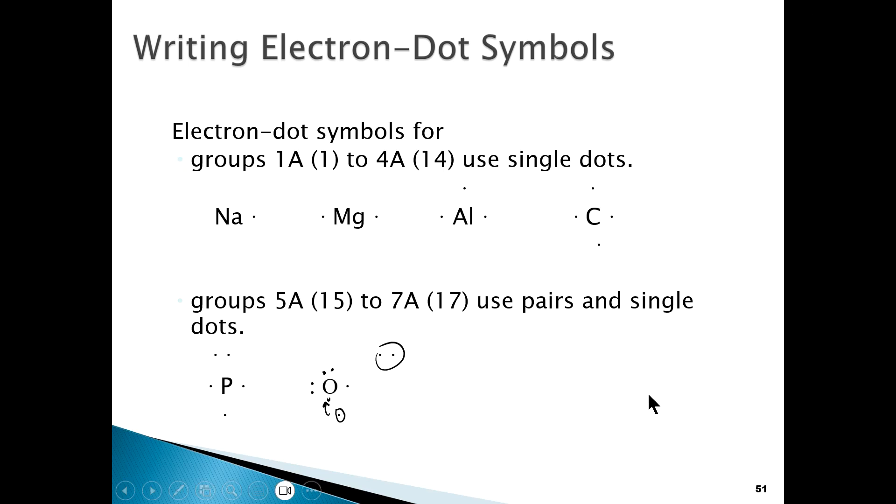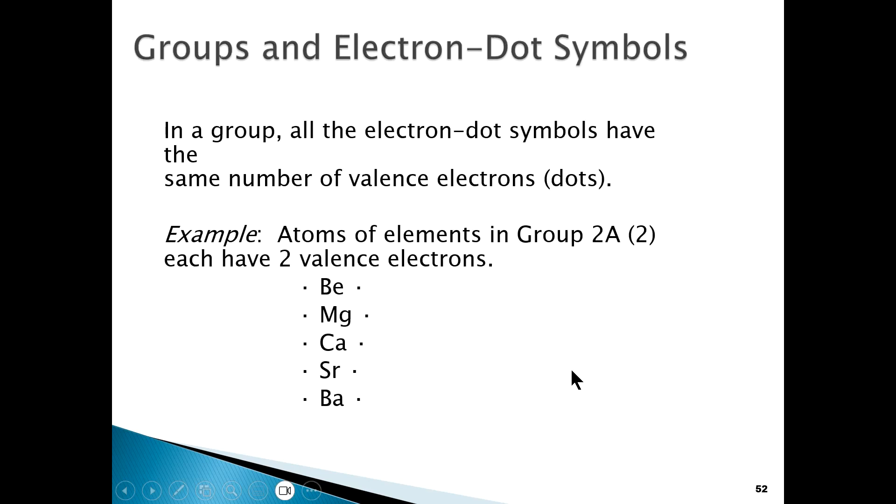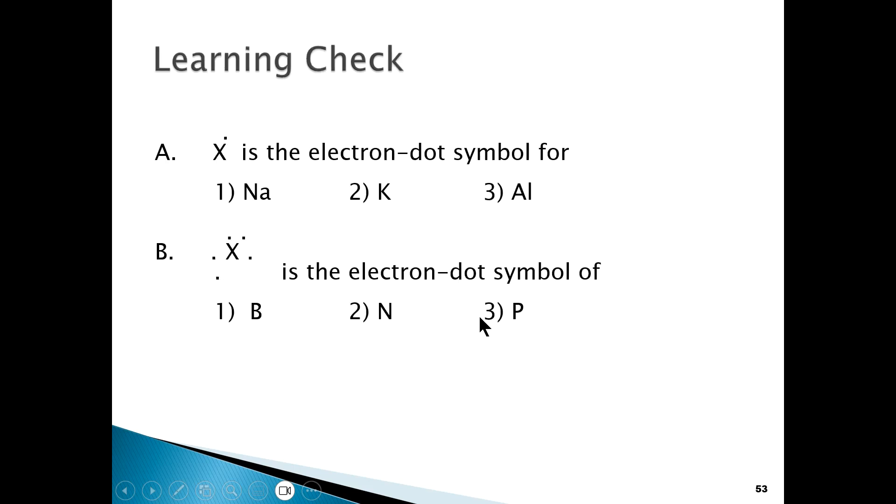It's a very simple idea, very useful, especially when you want to look at the number of valence electrons in each group. For the elements in group 2A, we can write down the Lewis symbols for each of these elements. You see they all have two electrons or two dots around each of the symbols for the different elements.